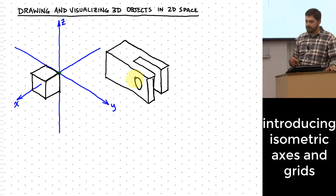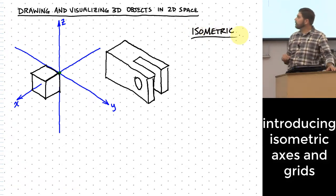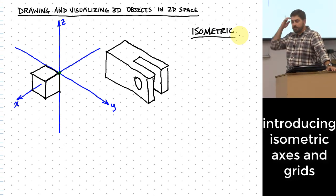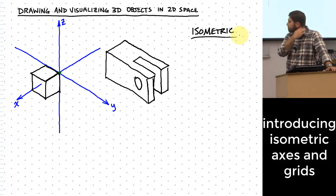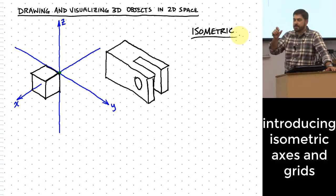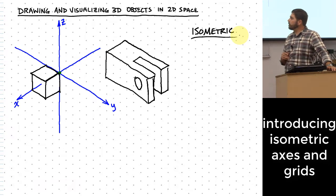Being able to draw and work in an isometric space is a really handy thing when we begin to understand these three-dimensional force systems. Let's talk about why it's called isometric. Someone suggests ISO means equal — that's right. ISO means equal. What does 'metric' mean? Measurement. So: equal measurement.